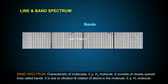Band spectrum is characteristic of molecules — for example, H2 molecule. It consists of closely spaced lines called bands. It is due to vibration and rotation of atoms in the molecule. Example: H2 molecule.